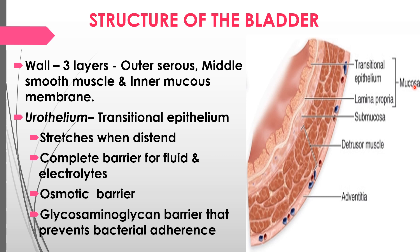The urothelium is a transitional epithelium and a very important structure of the bladder. It allows the bladder to stretch when distended with urine. It acts as a complete barrier for fluid and electrolytes, functions as an osmotic barrier, and has a glycosaminoglycan barrier that prevents microbial adherence — otherwise the bladder would be always infected.